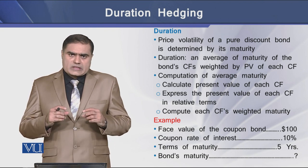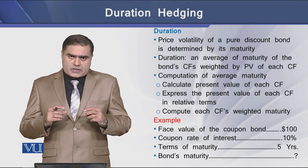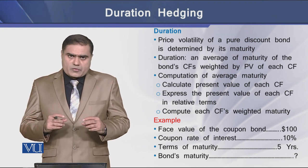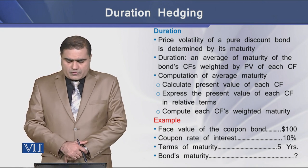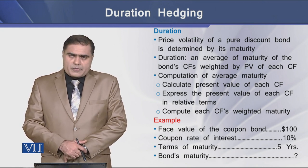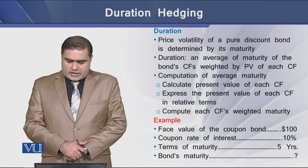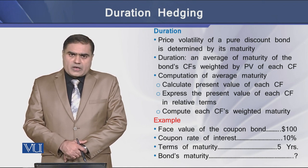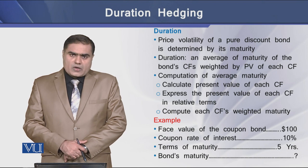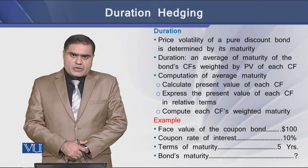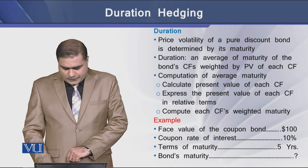To understand this 3-step model, we have an example: a 10% coupon bond with a face value of $100 and a maturity period of 5 years. We can determine the bond's duration using this particular data.